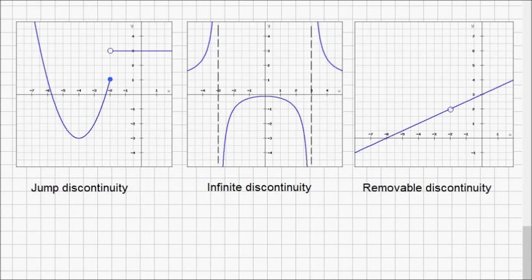In the jump discontinuity, the function has a value of y for any value of x, but at some point performs a jump, so there is a gap there.